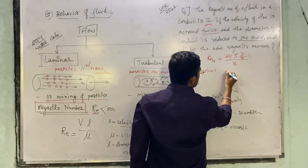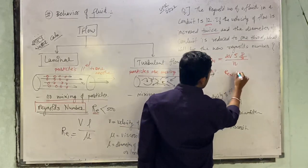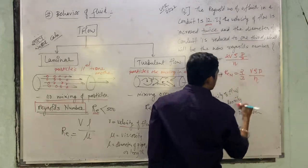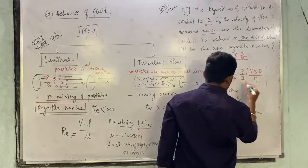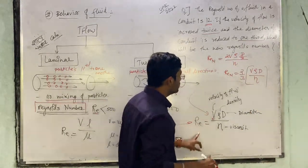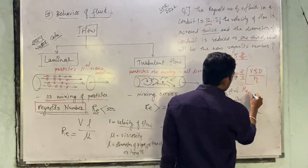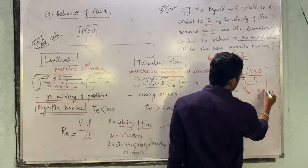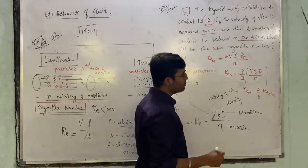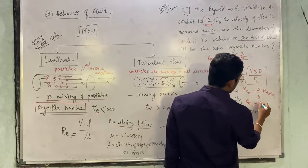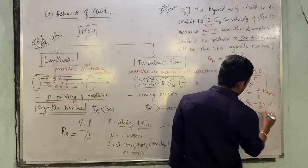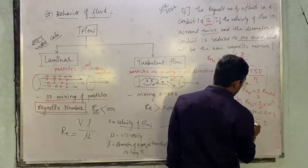You can easily calculate new Reynolds number from this: 2/3 times 12, which gives you 8. So 2 times 4, you will get the new Reynolds number as 8.